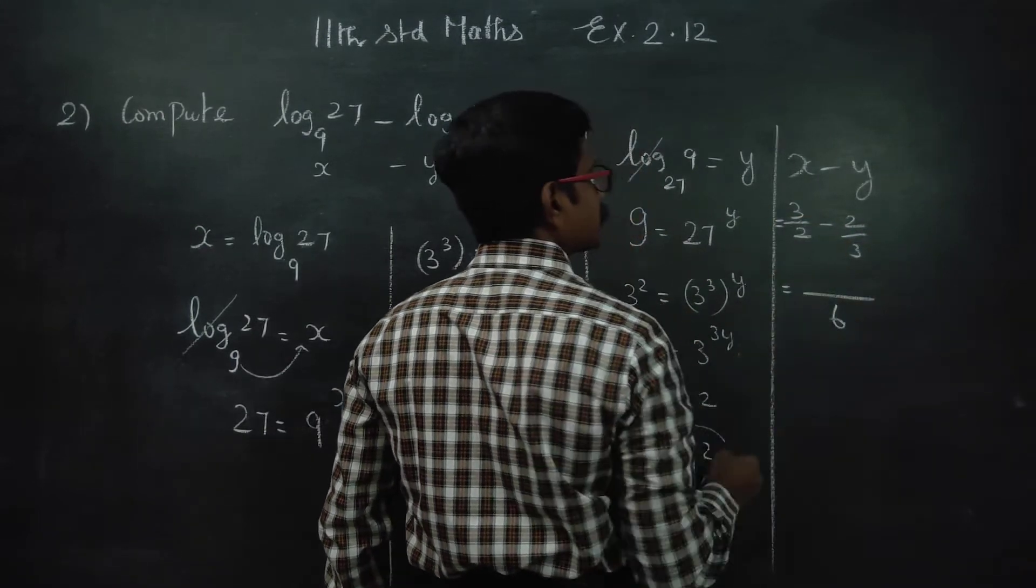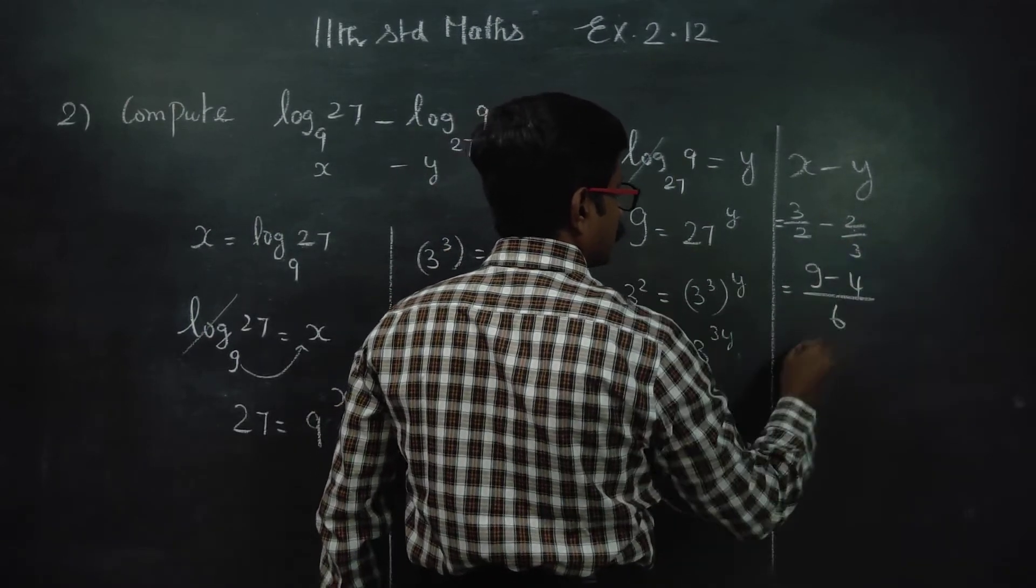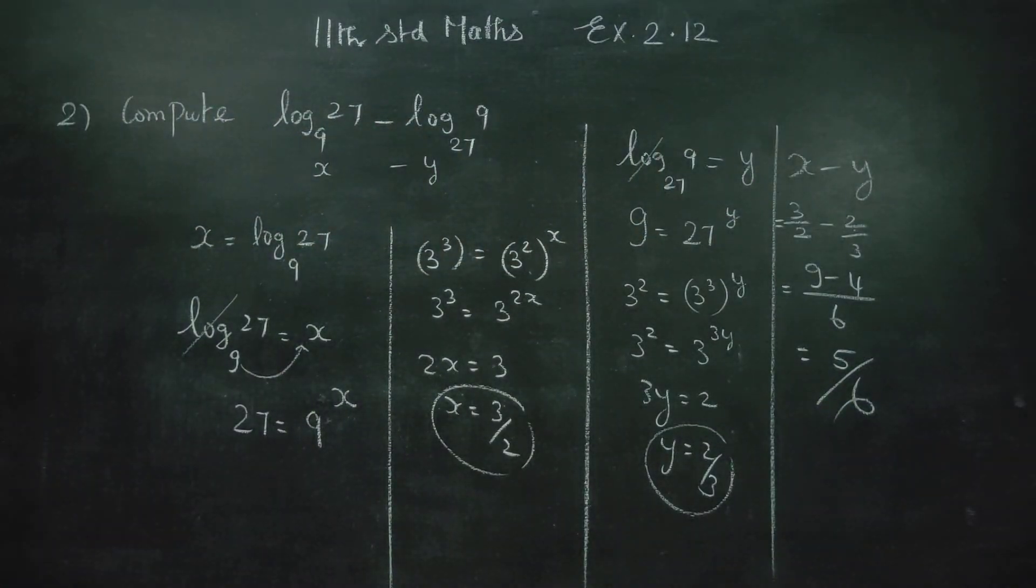The LCM is 6. 2 times 3 gives 9. 3 times 2 gives 4. So we have 9 minus 4 over 6. Your answer will be 5 by 6.